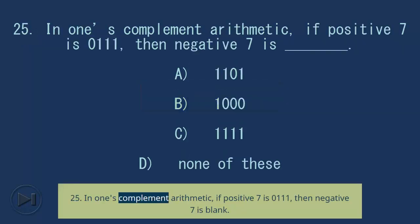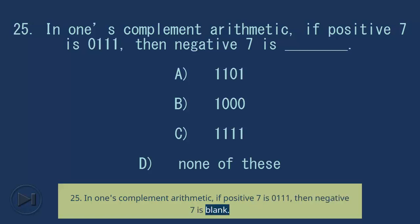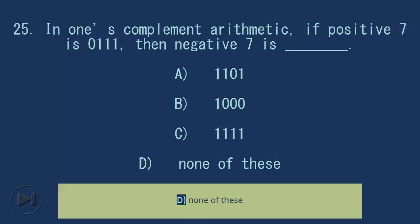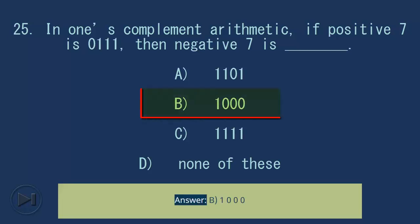Question 25: In 1's complement arithmetic, if positive 7 is 0111, then negative 7 is blank. A) 1101, B) 1000, C) 1111, D) none of these. Answer: B, 1000.